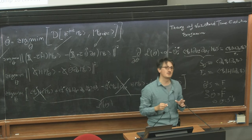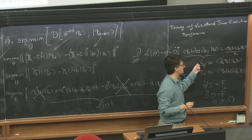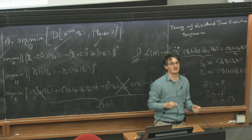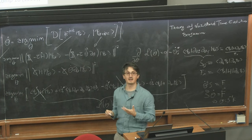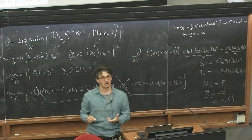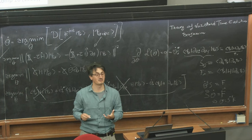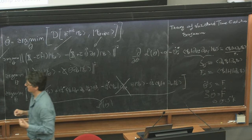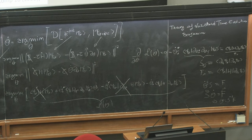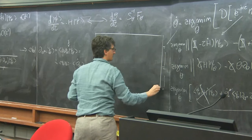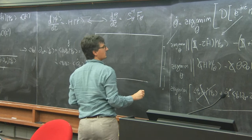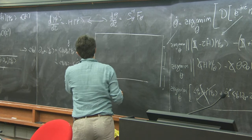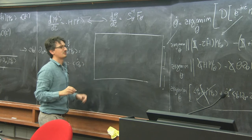This technique — called stochastic reconfiguration — can also be used to do real-time dynamics by simply adding an i here. Machine learning people call something that reaches the same equations, starting from different assumptions, natural gradient descent. The S matrix d_theta_i psi, d_theta_j psi can be seen as a metric tensor of my variational space.